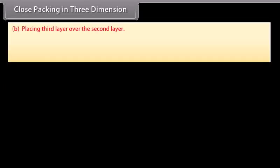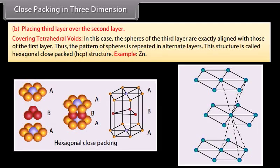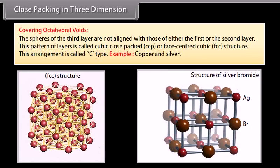Placing the third layer over the second layer: 1. Covering tetrahedral voids — the spheres of the third layer are exactly aligned with those of the first layer, so the pattern repeats in alternate layers. This structure is called hexagonal close packed (HCP) structure. Example: zinc. 2. Covering octahedral voids — the spheres of the third layer are not aligned with either the first or second layer. This pattern is called cubic close packed (CCP) or face-centred cubic (FCC) structure, called C type. Example: copper and silver.